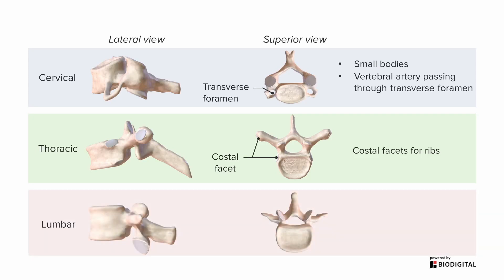Lumbar vertebrae are a bit larger because they carry more weight, and they have shorter, stouter spinous processes. Basically, you can think of a typical vertebra as resembling a lumbar vertebra, with the additional features of the cervical and thoracic vertebrae being unique to those regions.